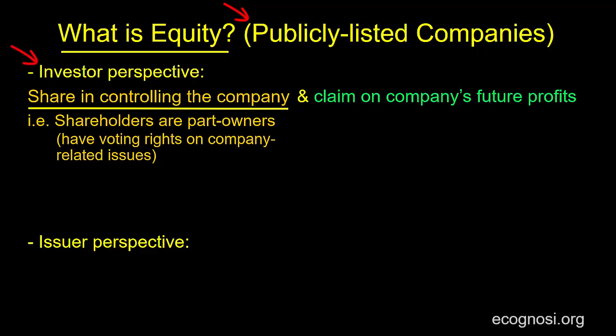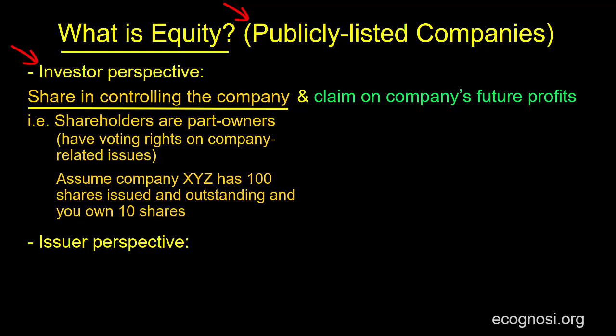As an example, assume that company XYZ has 100 shares issued and outstanding and that you own 10 of those shares. That would mean that you own 10% of the company, and we arrived at that number by dividing the 10 shares you own by the total number of shares. Of course, in the real world, we shouldn't expect to see a publicly listed company with just 100 shares issued and outstanding.